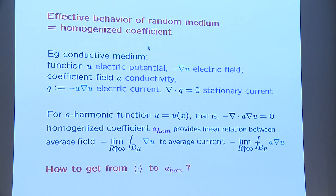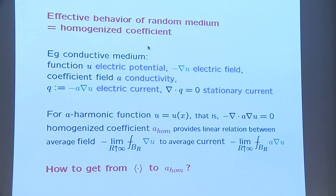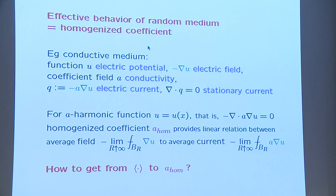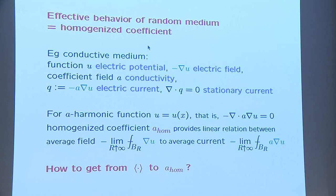To understand the representative volume element method, think in terms of the physical application. Functions should be thought of as electric potentials; the negative gradient is the electric field by Maxwell; the coefficient field is the conductivity; and multiplying the electric field by the conductivity gives the electric current, which is stationary if its divergence vanishes. The purpose of the effective conductivity is to provide a linear relationship between the average potential gradient and the average current. The microscopic conductivity is the proportionality between the local field and local current, while the effective behavior gives the relationship between the spatially averaged field and the spatially averaged current.